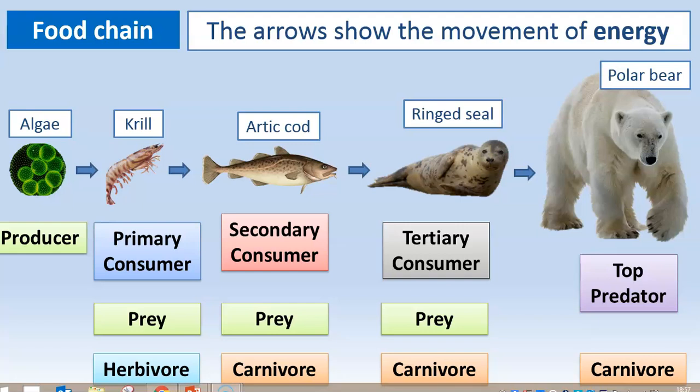The algae is referred to as a producer, because it produces its own food using photosynthesis. All the other organisms are consumers. The first consumer is the krill, then we have the secondary consumer — the arctic cod — then the tertiary consumer, the ring seal, and the quaternary consumer, the polar bear. The polar bear is also referred to as the top predator because it is the hunter and nothing else hunts or eats it. Humans will, but they don't rely on that as their food source — just like lions, which will eat humans but don't rely on them. So we stop the food chain at the usual food source. The polar bear is the top predator.